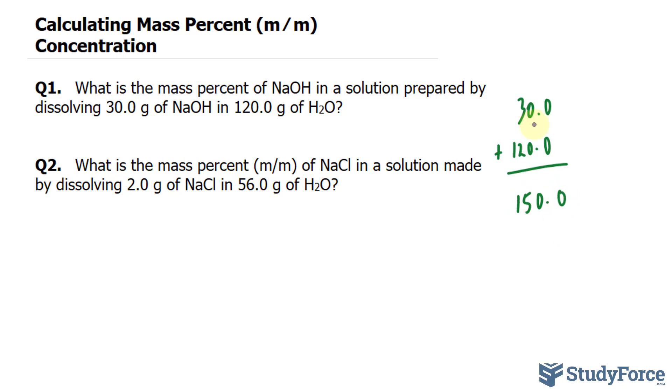Notice that both of these numbers had one digit after the decimal place, hence we put one digit here. Since we're looking for the mass percent of sodium hydroxide, I'll now take its mass of 30.0 grams and divide it by the total, and that's all there is to it.